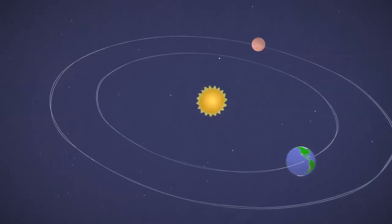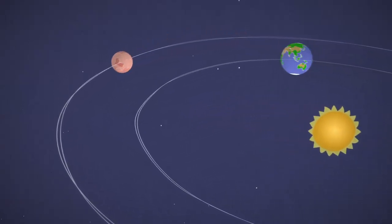About every two years, the two planets are in perfect positions to get to Mars with the least amount of rocket fuel. That's important. The total trip is over 300 million miles.